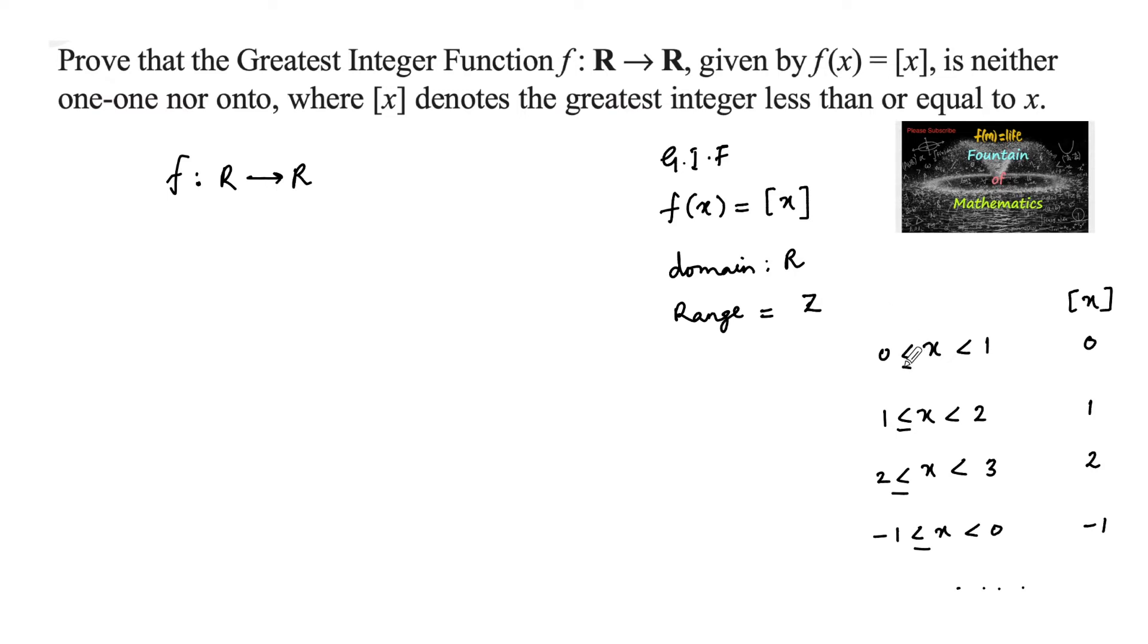From here we can see clearly that for two different values of x between 0 and 1, the step function gives only 0. For example, 0.5 ≠ 0.6, but [0.5] = [0.6] = 0. Hence, f is not one-to-one.